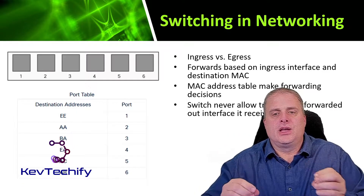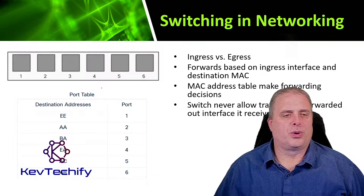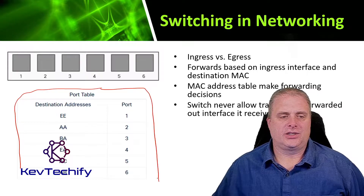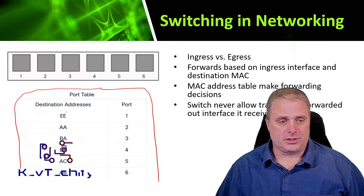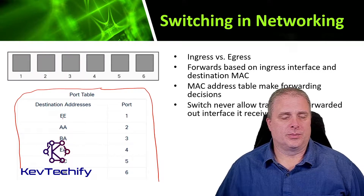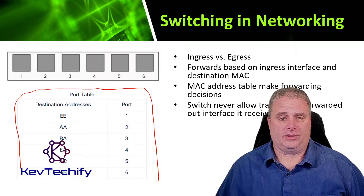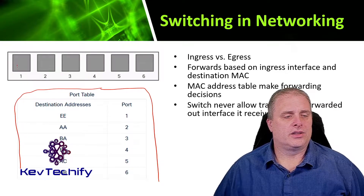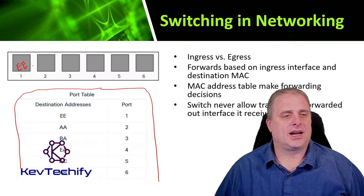MAC address tables make the forwarding decision. Here we see a port address table — this is a simplified version. We have the destination address here; normally this would be a true MAC address, but for demonstration purposes we just have a simple address. Then we have what port it's associated with. Port one: the device that has the MAC address of EE is connected here, so you can think of this as device EE on port one.